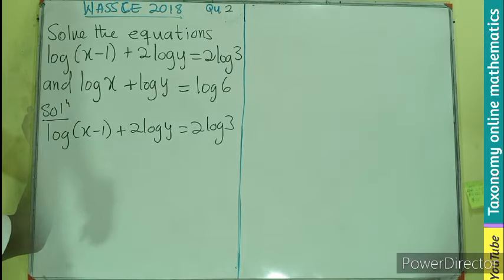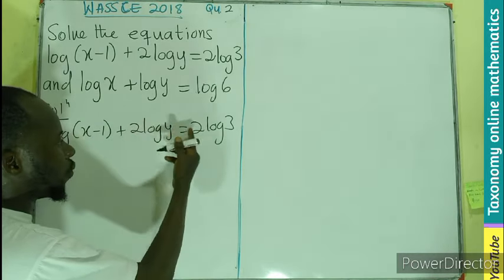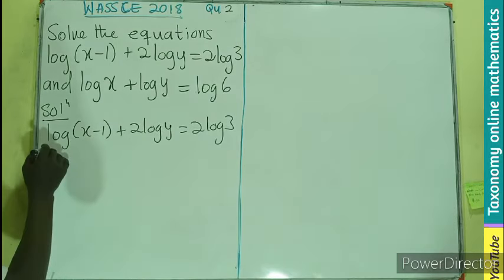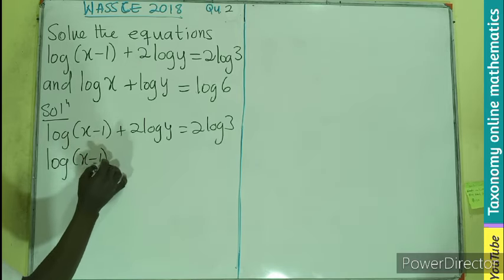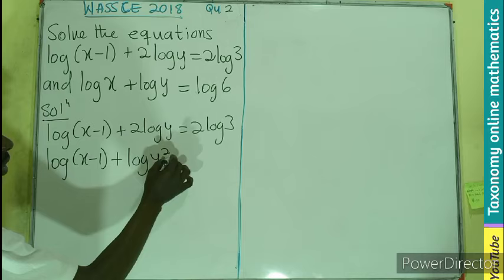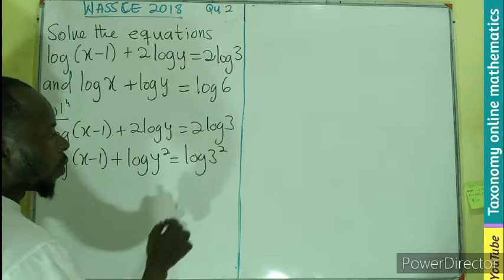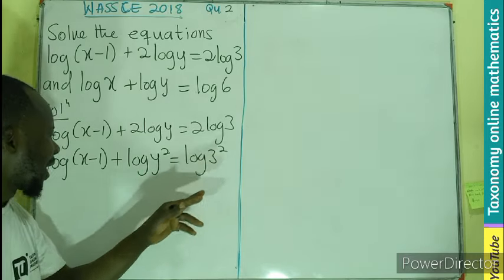The first thing we are going to apply is transferring the 2 from here to become an exponent. So this is going to be log(x-1) + log(y²) = log(3²). And I think in the case of this, we can get 9.